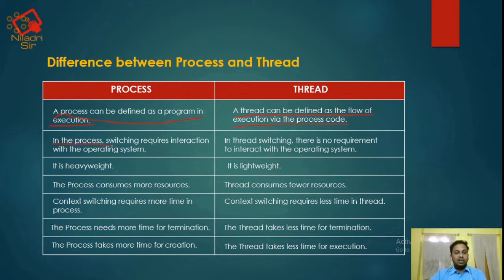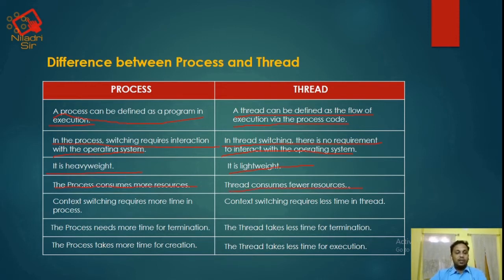In process switching, interaction with the operating system is required. In thread switching, there is no requirement. A process is heavyweight, a thread is lightweight. The process consumes more resources; the thread consumes fewer. Context switching requires more time in a process but less time in a thread.